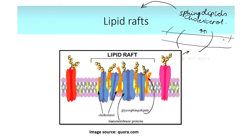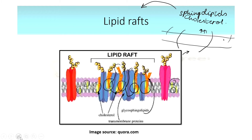Here, the yellow color portion of the plasma membrane represents the lipid raft region. In the lipid raft, we have cholesterol. In the orange color portion, we have glycosphingolipids and sphingolipids. These are all aggregated together to form lipid rafts.